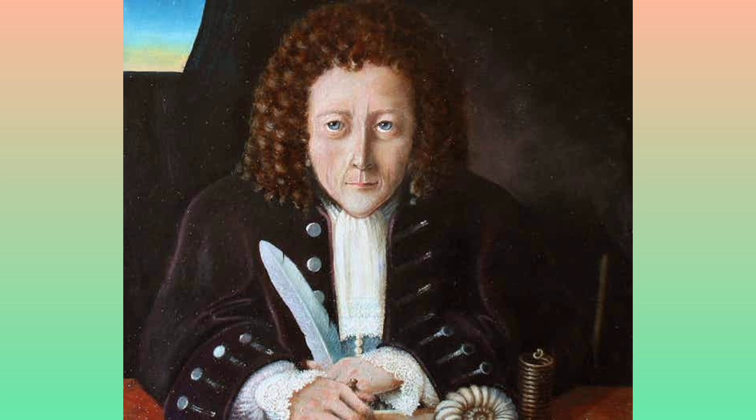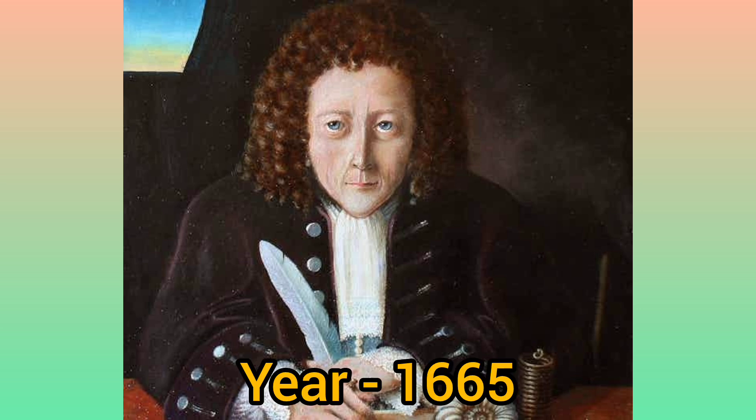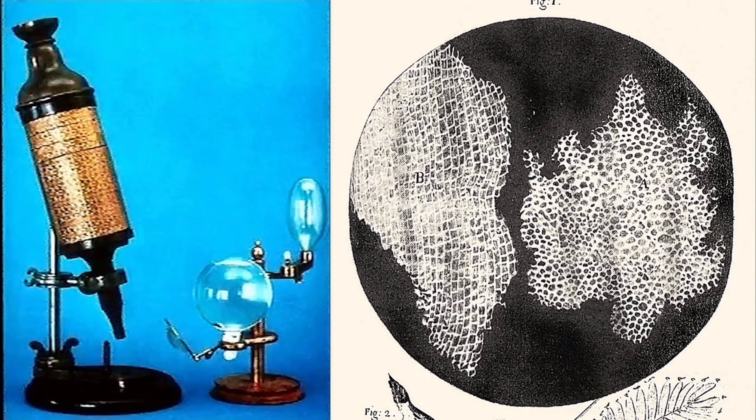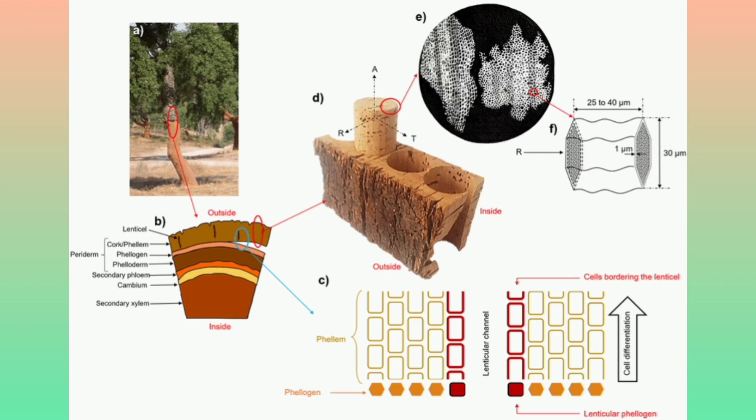Firstly, let us study a few historical aspects. The cell was first discovered by Robert Hooke in the year 1665, by observing slices of cork under the microscope. Cork is nothing but the bark of a tree.